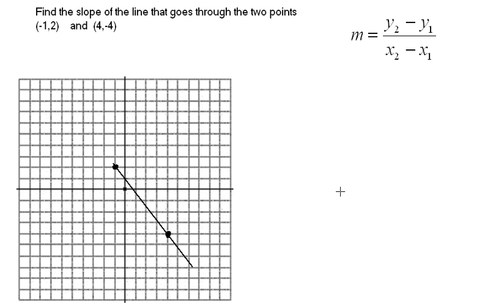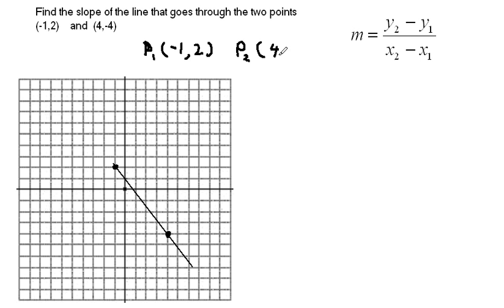We're going to use the slope formula. The first thing we do is take both points and label them. I'll arbitrarily call negative 1 and 2 point 1 (P1), and 4 and negative 4 point 2 (P2). It doesn't matter which one you pick for P1 and P2. So negative 1 becomes x1, 2 becomes y1, 4 becomes x2, and negative 4 becomes y2.